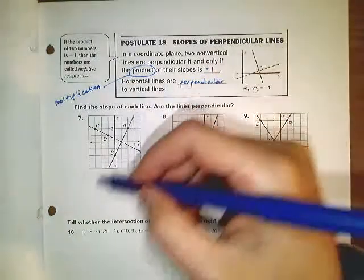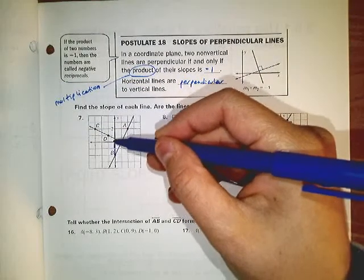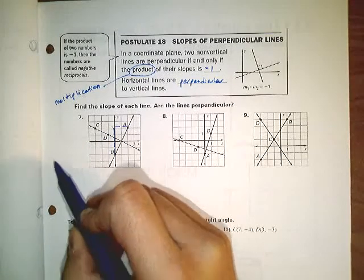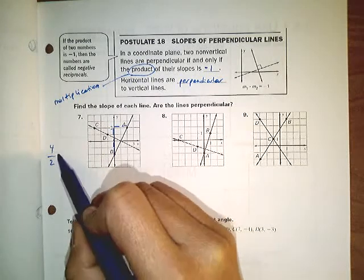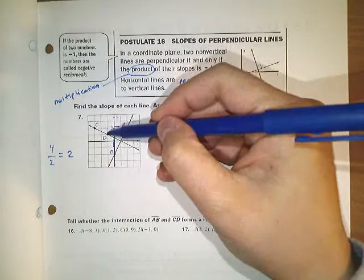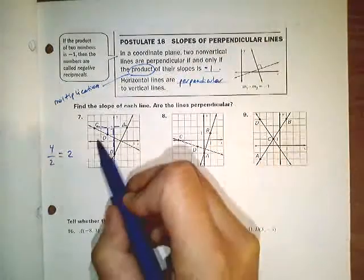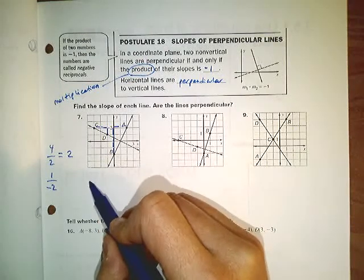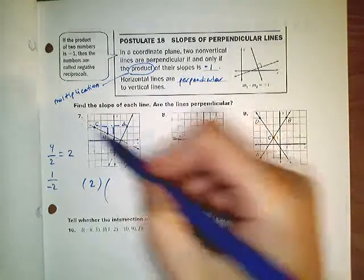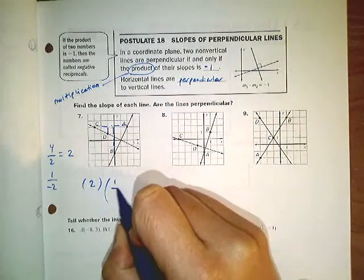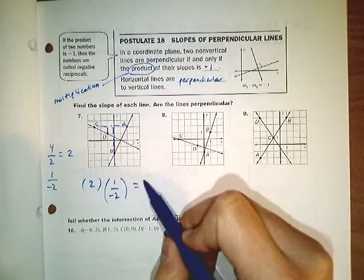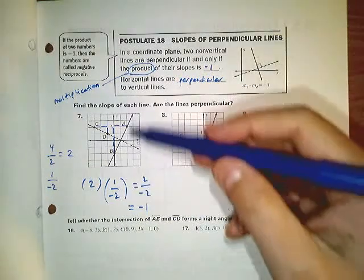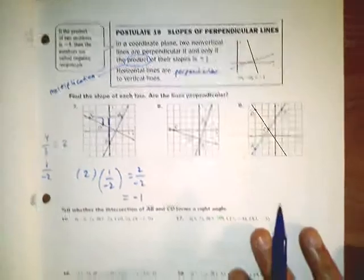For line AB, I'd move up 1, 2, 3, 4 units for every 2 units to the right, giving a slope of 4/2 or 2. The other line moves up 1 unit for every 2 units to the left — left is negative — so that slope is positive 1 over negative 2. If I take the slope of the first line and multiply by the slope of the second line: 2 times 1 is 2 on top, and I just have negative 2 on the bottom. Positive 2 divided by negative 2 is negative 1, so yes — these two lines are indeed perpendicular.